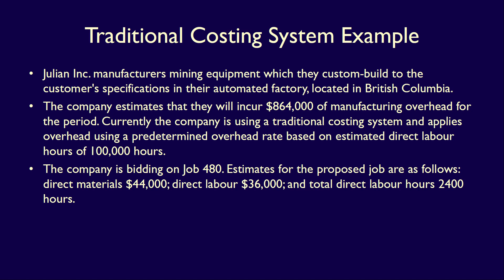The company is bidding on Job 480. Estimates for the proposed job are as follows: direct materials $44,000, direct labor $36,000, and total direct labor hours of 2,400 hours. The company needs to estimate the total cost of the job in order to provide a quote to the customer. Since we're using the traditional costing system, let's start by calculating the predetermined overhead rate, also called the plant-wide rate.